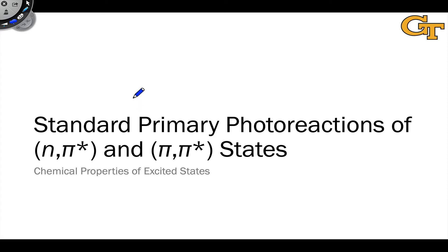In this video, we're going to survey some of the standard primary processes associated with nπ* and ππ* excited states — these very common excited states of organic chromophores such as the carbonyl and alkene. Our goal here is to keep it very general. We're going to see specific examples of reactions of photo-excited carbonyls and alkenes in future videos, and what we want to do here is understand the possibilities for their excited states in very general terms.